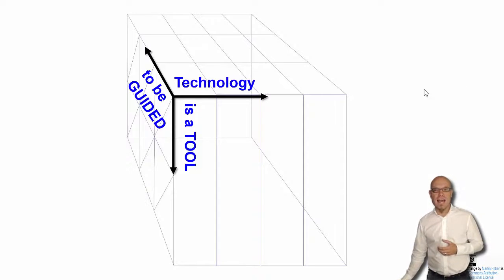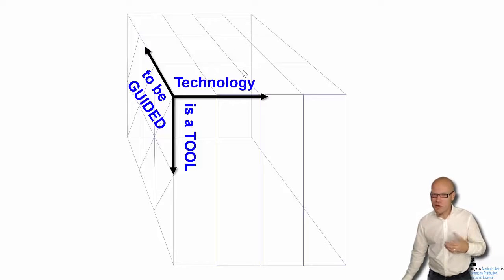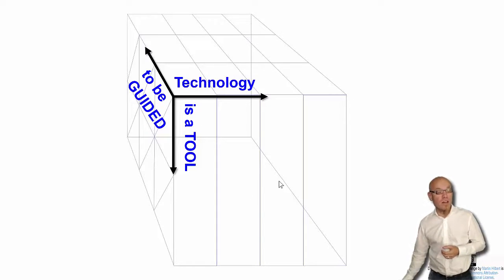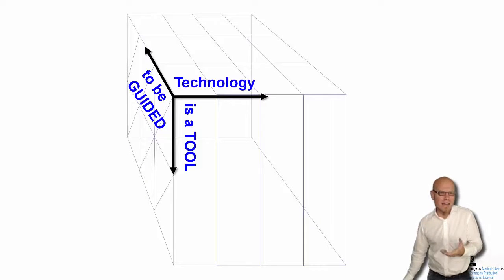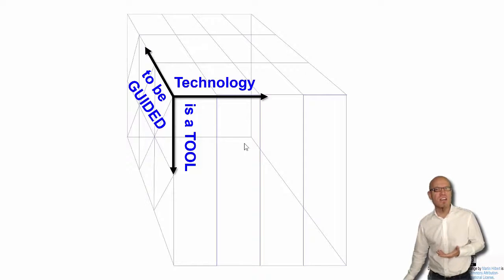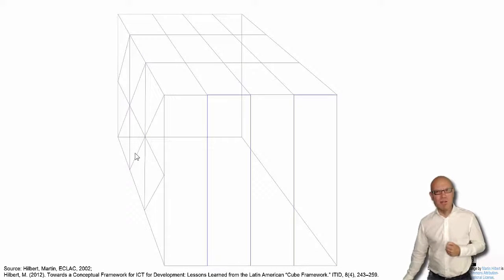We first of all have the digital technology — that's the basic condition on which the digital age is based. Technology is a tool for social modernization, and this tool, like every tool, has to be guided because it is not naturally good or bad. It is just a tool. So we have these three dimensions of technology, society, and guiding interventions.